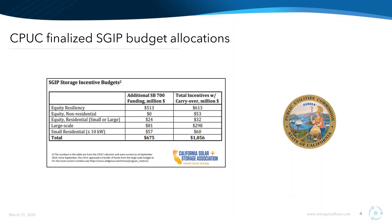According to the updated SGIP handbook, if the small residential budget runs out, program administrators can use funds from the large scale storage category, if applicable, to fund residential projects as they are submitted. Overall, not a ton was allocated to the general market budget — that is the large scale and the small residential outside the equity and equity resiliency budgets.